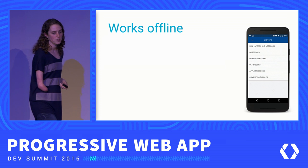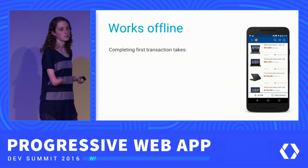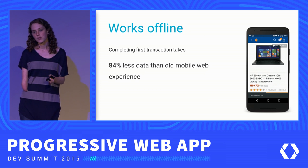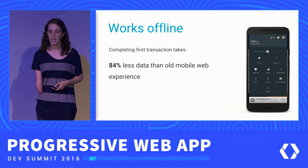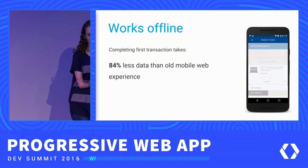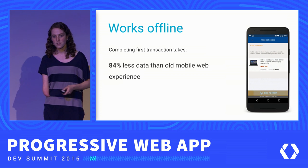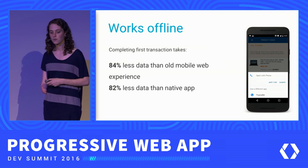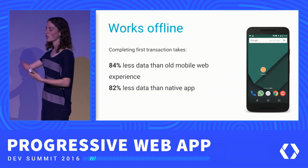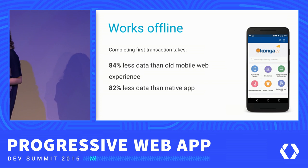They've really taken time to think through what is the critical use case for their users and how they can let them complete that use case even if they have no connection. And they've actually found that for that critical flow, this has shown a lot of improvement. Compared to their previous mobile website, this used 84% less data. And compared to their native app, this new flow actually used 82% less data. So this has been a drastic improvement — not only to their previous mobile website, but also to their native app experience.